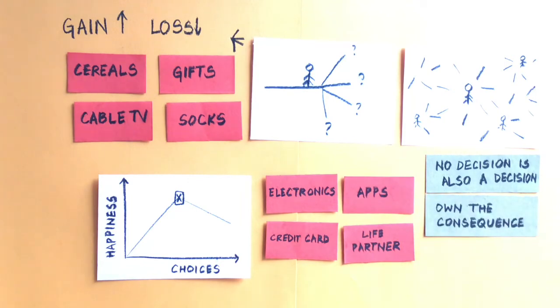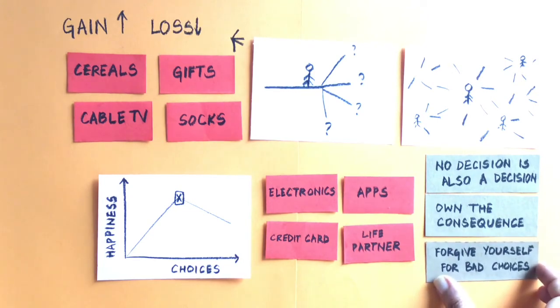We should not take a decision just for the sake of it because someone pressurized us or we think that the deal will be over or the discount is going to end. We should own the consequence of whatever decision we make. We do make bad choices, and although we own the consequence, if it was a bad choice, let us analyze the options we had.